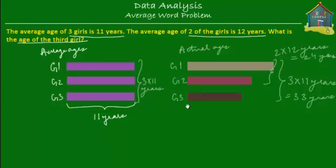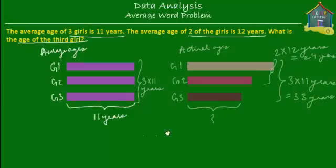Now this is very simple. All we have to do is find out what the age of the third girl is — G3. We know that the total age of the three girls is 33 years, and the total age of G1 and G2 is 24 years. So the age of the third girl is 33 minus 24, which gives you 9. The age of the third girl is 9 years.